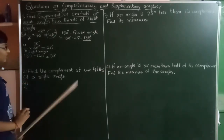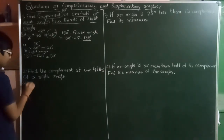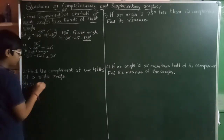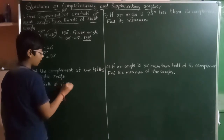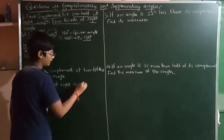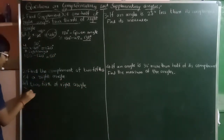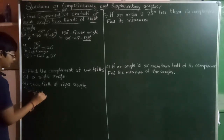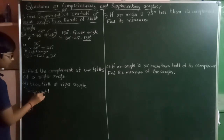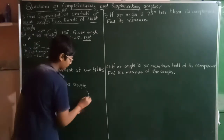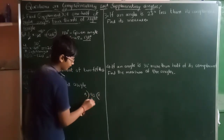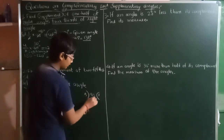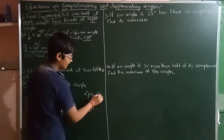Second question: find the complement of two-fifths of a right angle. We should find the complement of two-fifths of a right angle. Two-fifths of a right angle means 2 by 5 into 90 degrees. Dividing 90 by 5 gives 18, and carrying the zero gives 18.